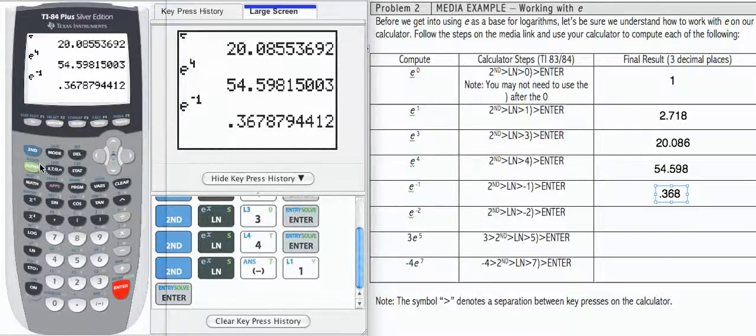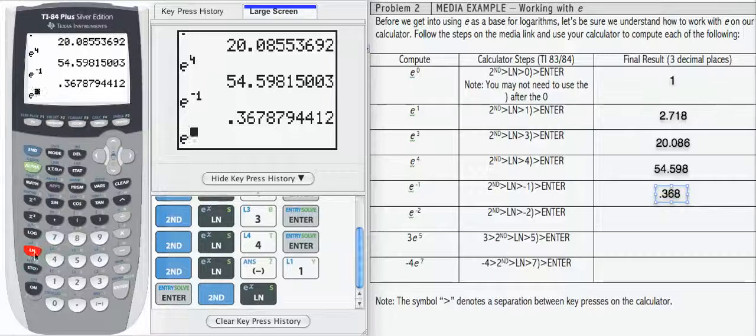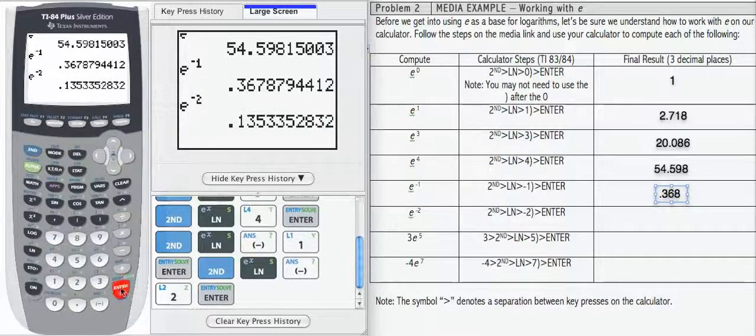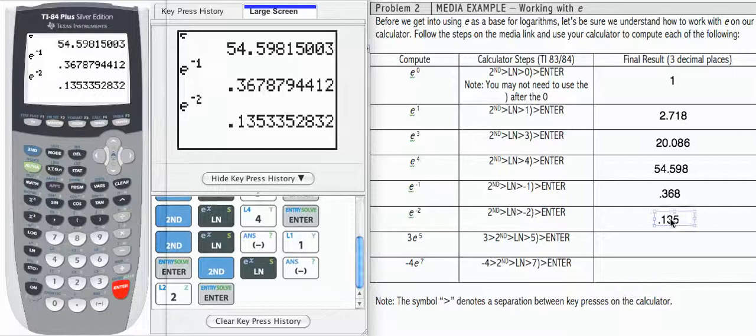Let's do another one, second, and then negative 2 is our exponent, enter, 0.135, rounded.